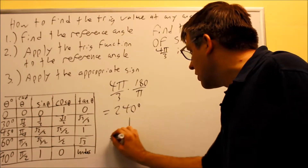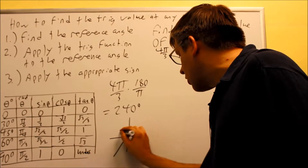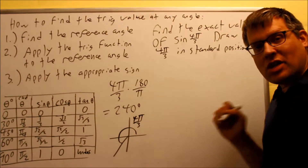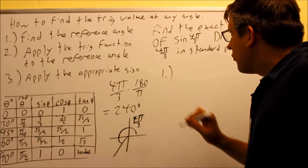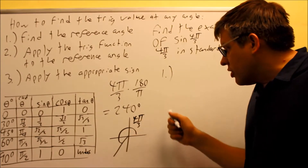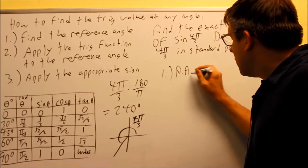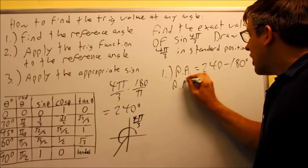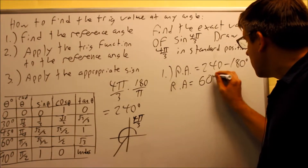We want to draw 240 in standard position. 240 is between 180 and 270, so it's drawn down in the third quadrant. I'll use four pi over three since that's how it was originally given. Following the three steps, step one is to find the reference angle. In the third quadrant, the formula is theta minus 180. So the reference angle equals 240 minus 180, which is 60 degrees. Also, 60 degrees equals pi over three from the table.